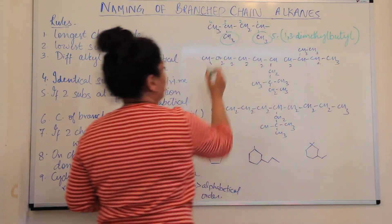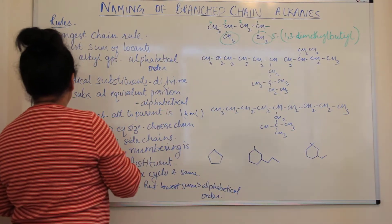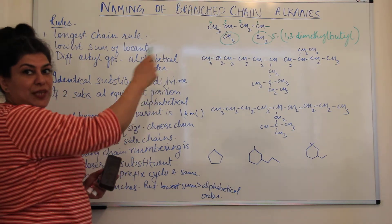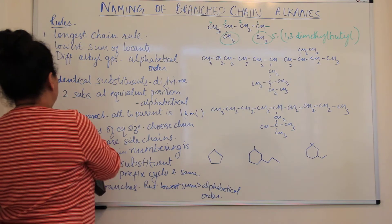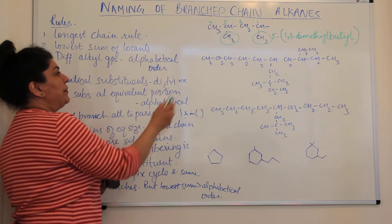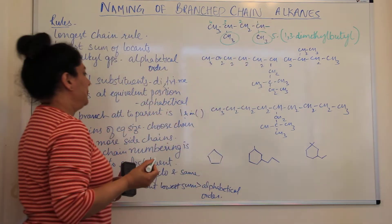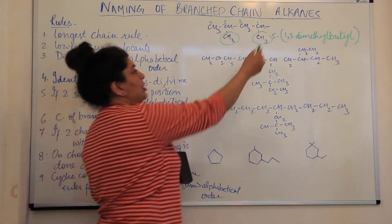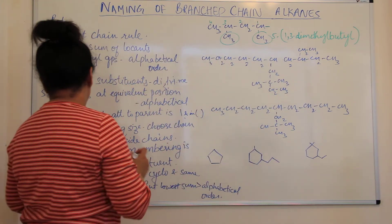Let us review the rules. The carbon of a branch-chain substituent which is attached to the parent chain is always given locant one. And the name of this group is put in parentheses — that is, in brackets.